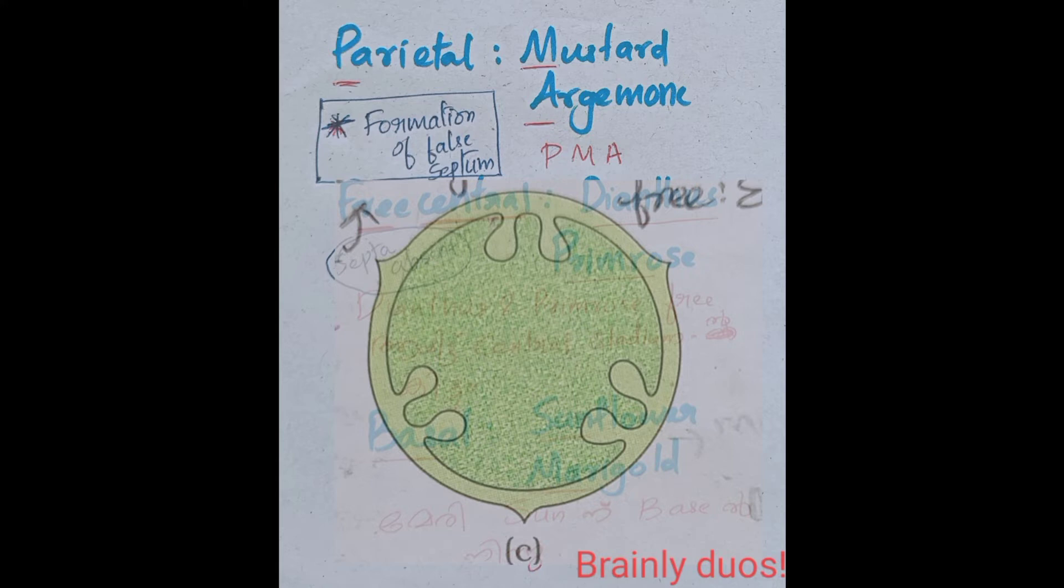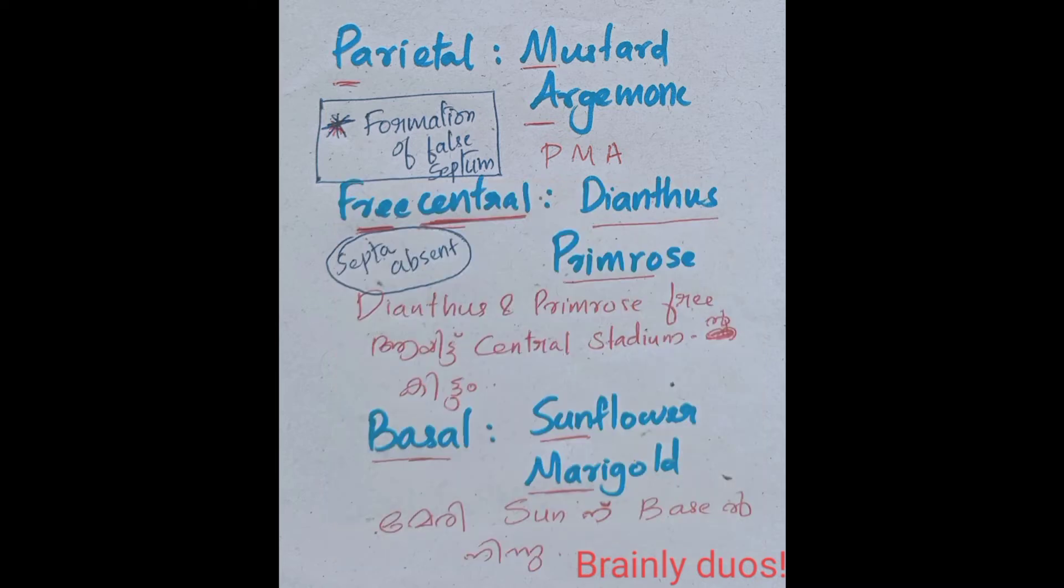The ovaries are one-chambered. The ovaries are two-chambered because it has a false septum form. The false septum formation is called parietal placentation. The ovules are in the peripheral part. The peripheral part is called parietal formation of false septum. It is called PMA.